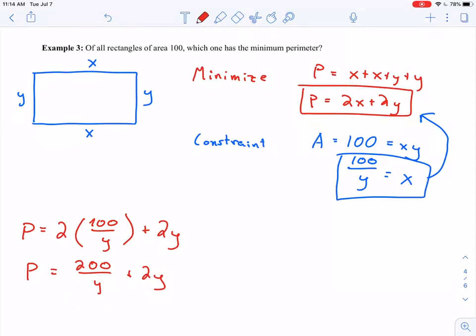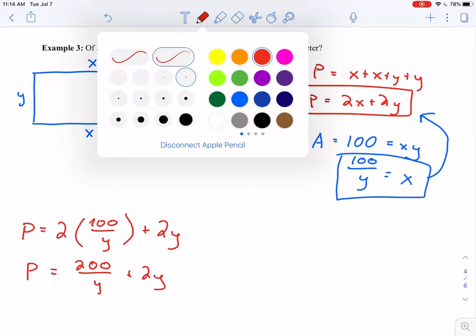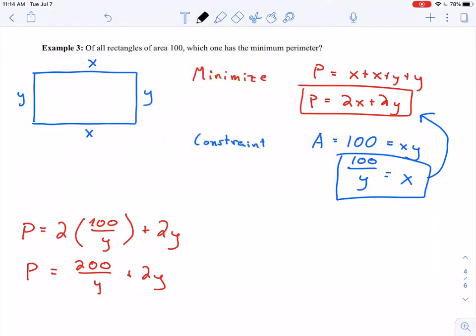I need to come up with my domain now. What is my interval of interest? What are the values that make sense for our problem? This one's a little bit trickier, I think.